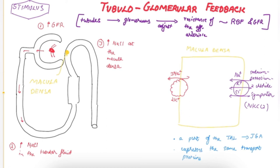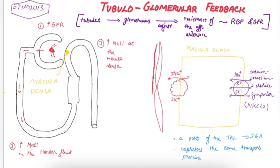The macula densa is close to the afferent arteriole. The afferent arteriole is lined by vascular smooth muscle cells, also known as juxtaglomerular cells or granular cells. These granular cells release renin.